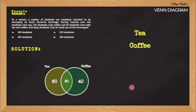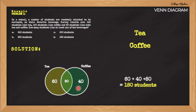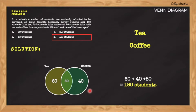As our Venn Diagram is complete, we can now identify how many students like at least one of the beverages. We just need to simply add all the values on our Venn Diagram. So 60 plus 40 plus 80 is equal to 180. Therefore, 180 students like at least one beverage. From the choices, the correct answer is letter D. Take note that if there are students who did not like either tea or coffee, the number should be placed outside the circles, but this must be excluded in the computation since the problem only asks for the number of students who like at least one of the beverages.